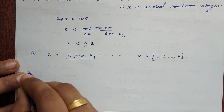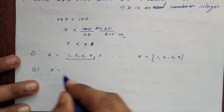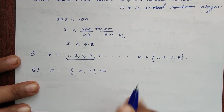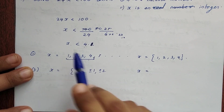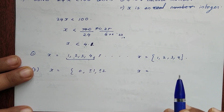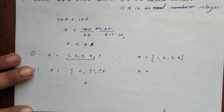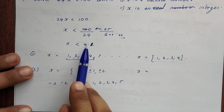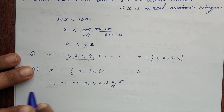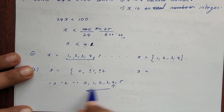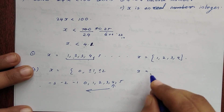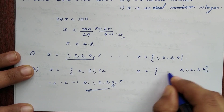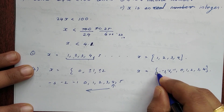Second option: x is an integer. Integers include 0 and positive or negative values: ..., -3, -2, -1, 0, 1, 2, 3, 4, etc. Since x < 4.1, the integer solution includes 4, 3, 2, 1, 0, -1, -2, -3, and so on to negative infinity. We can show this on a number line from negative infinity up to 4.